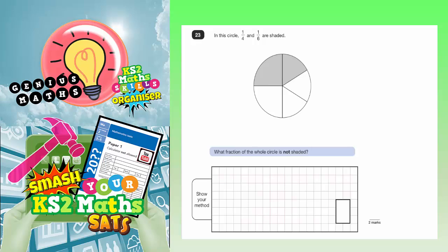Question 23. In this circle, a quarter and a sixth are shaded. What fraction of the whole circle is not shaded?